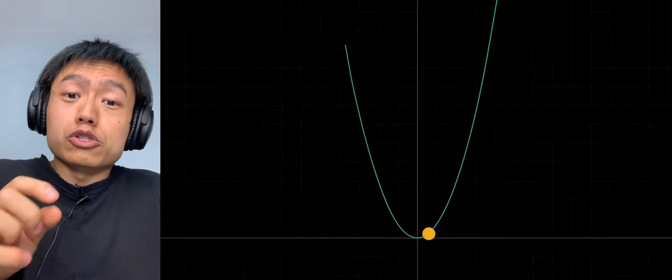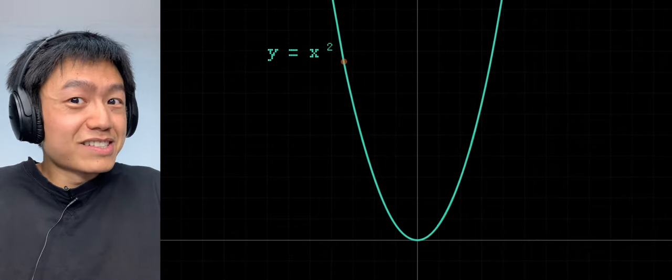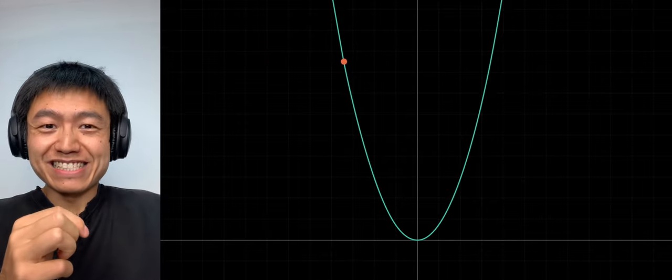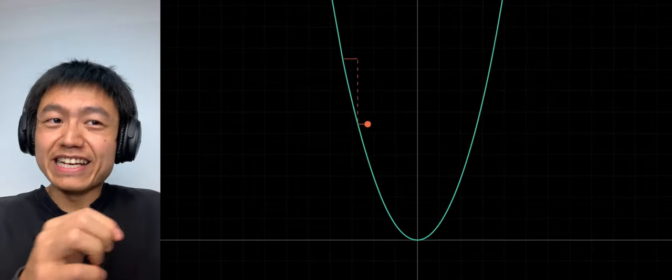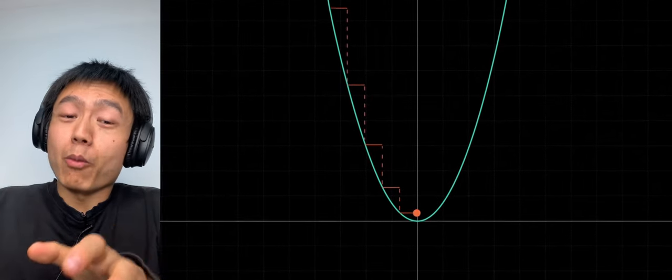This starts with a simple quadratic function, y equals x squared. Let's pick a point at random. Wherever it is, by adjusting x, it ultimately finds its way to the lowest point, the place where y is the smallest.